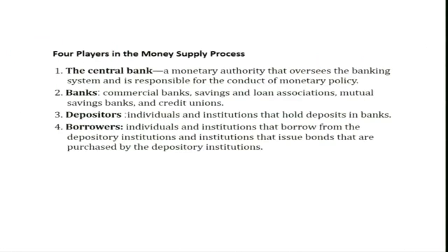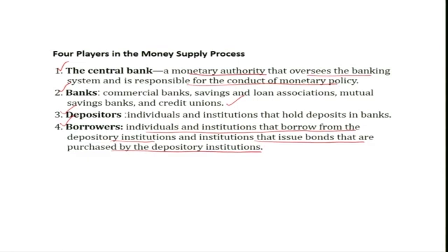In the money supply process there are mainly four players. The first is the central bank, which is the monetary authority that oversees the banking system and is responsible for the conduct of monetary policy. The second is the banking system — commercial banks, savings and loan associations, mutual savings banks, and credit unions. Third are depositors — individuals and institutions that hold deposits in banks. Fourth are borrowers — individuals and institutions that borrow from depository institutions.